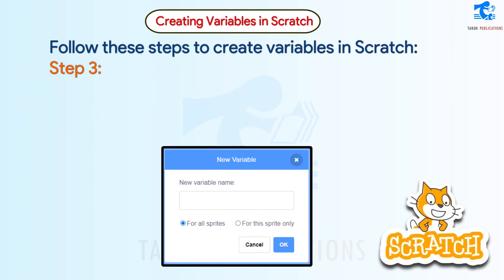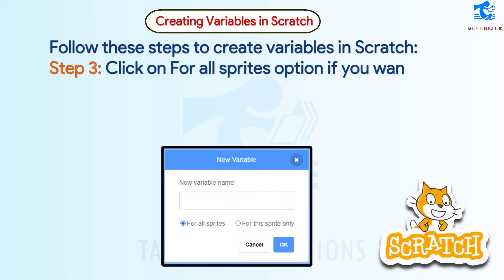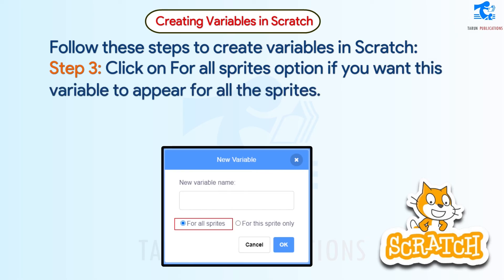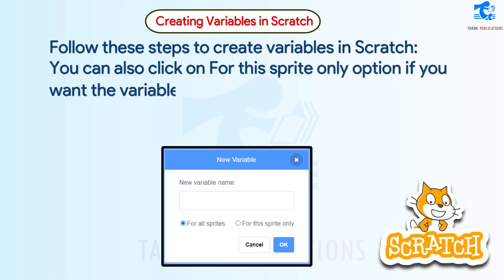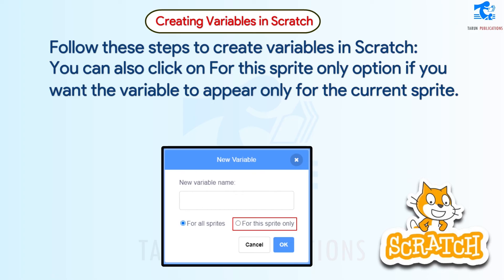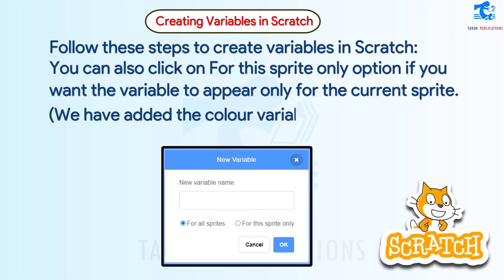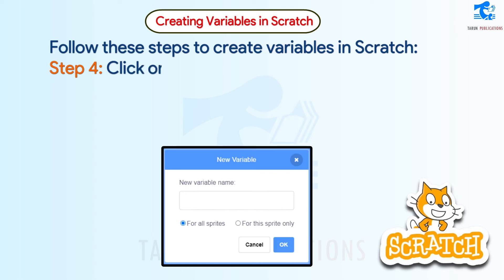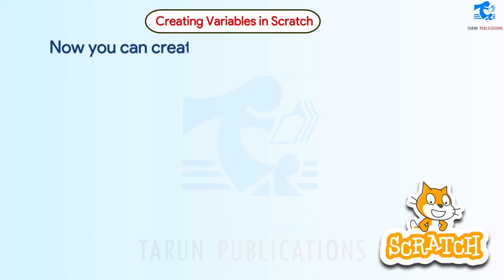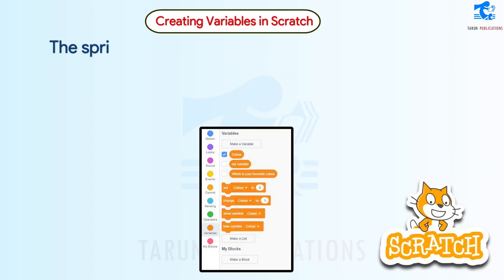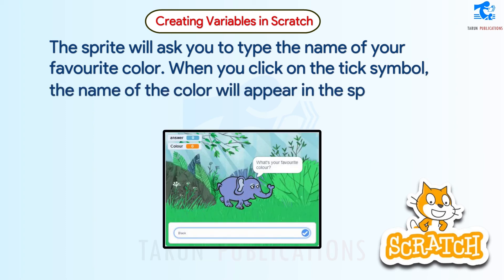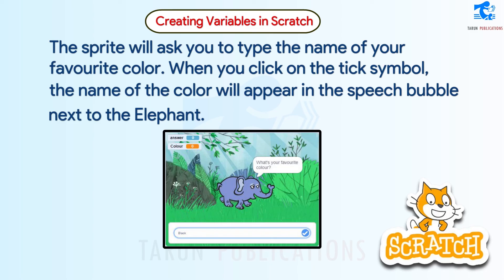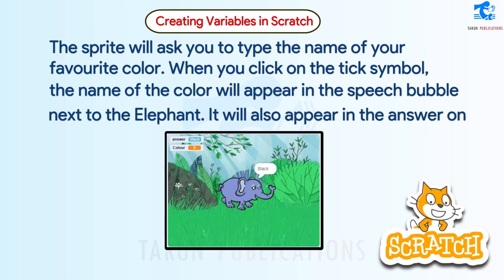Step 3 - Click on 'For all sprites' if you want the variable to appear for all sprites. You can also click 'For this sprite only' if you want the variable to appear only for the current sprite. We have added the color variable here. Step 4 - Click the OK button. Now the sprite will ask you to type the name of your favorite color, and the name of the color will appear in the speech bubble next to the elephant and in the answer on the stage area.